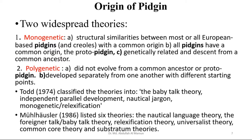The monogenetic approach thinks that all Pidgins of a particular area, say the European region, have a common origin. On the other hand, the polygenetic theory theorizes that Pidgins did not evolve from a common ancestor or proto-Pidgin. Rather, Pidgins developed separately from one another with different starting points. Each Pidgin had its own origin, its own beginning.